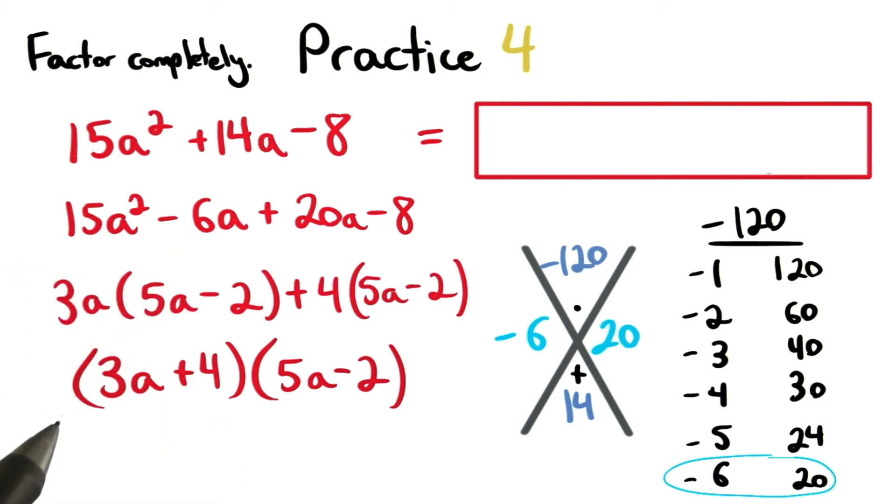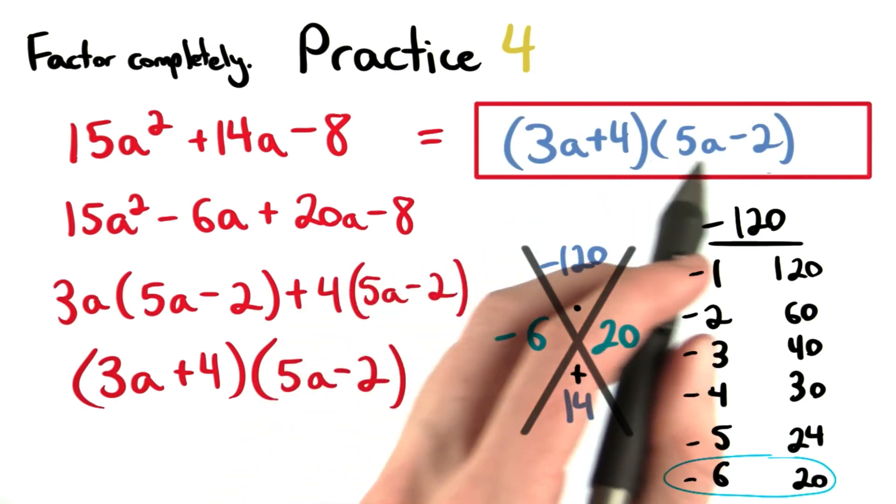We finish out our problem by factoring by grouping, and these are two factors: 3a plus 4, and 5a minus 2.